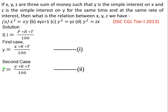Second case में बोल रहा है: z is the simple interest on y। यानी y rupees invest करने पर simple interest z मिल रहा है। Rate और time same हैं, तो z = y·R·T / 100। यह हमारा equation 2 बन गया।